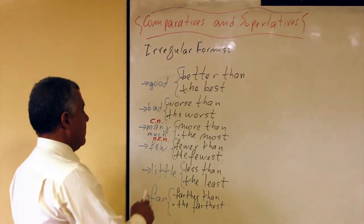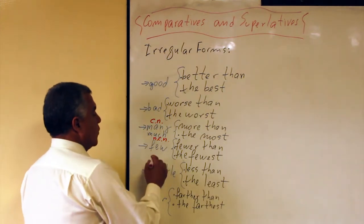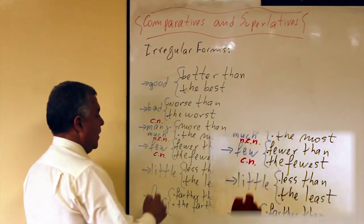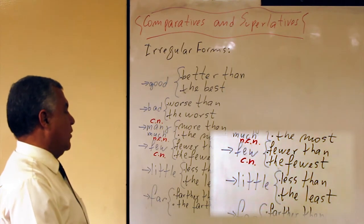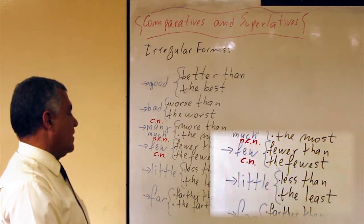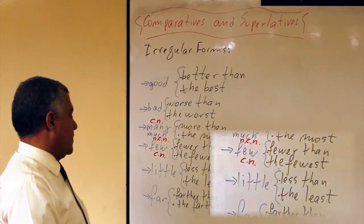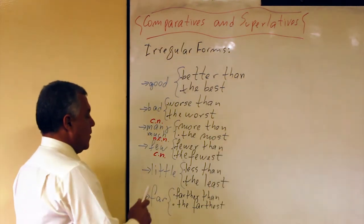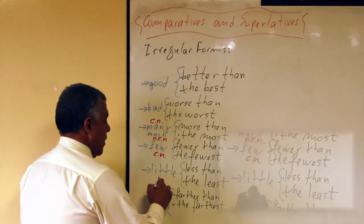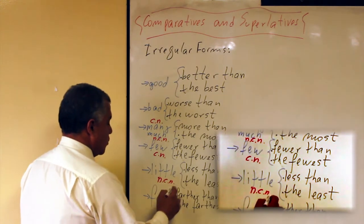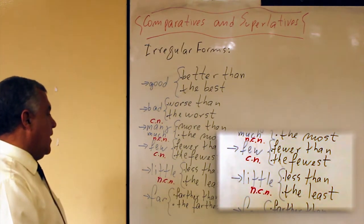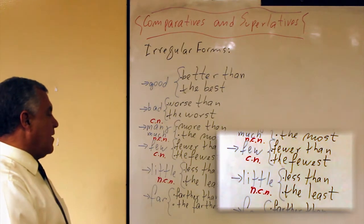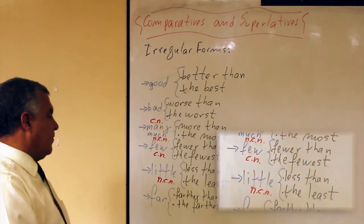Few, the same. Few we use with comfortable nouns. The comparative is fewer than, the superlative form is the fewest. Level, we use with no comfortable nouns. Now, the comparative form is less than, the superlative form is the least.